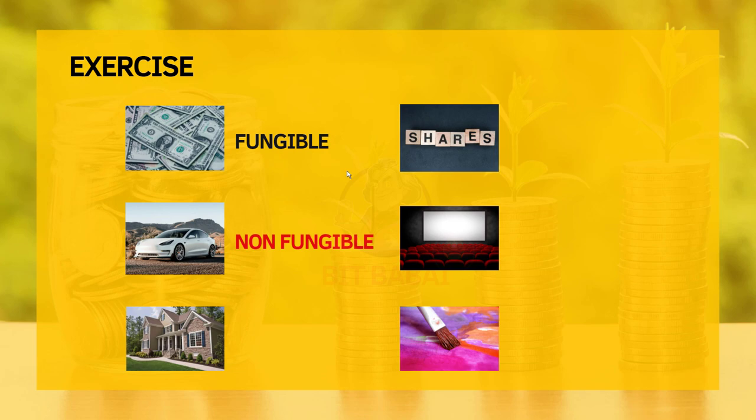Next is houses. Each house can be even more different from other houses, because there are hundreds of properties that could change from house to house — like location, size, layout, finishing, things like that. So houses are largely non-fungible.